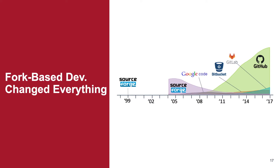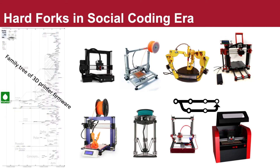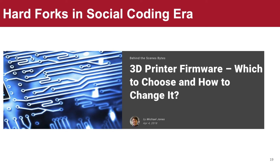After fork-based development was introduced, it has completely changed how people collaborate to build software systems. GitHub encouraged people to fork projects and contribute to the community, but we still observe lots of hard forks existing in social coding sites. One example we have seen is the 3D printer firmware community. Nowadays there are thousands of 3D printers, and actually these are all hard forks of a few original projects. People are confused by so many similar projects and struggle about which one should be used as a starting point — essentially the same concerns people had for traditional forks.